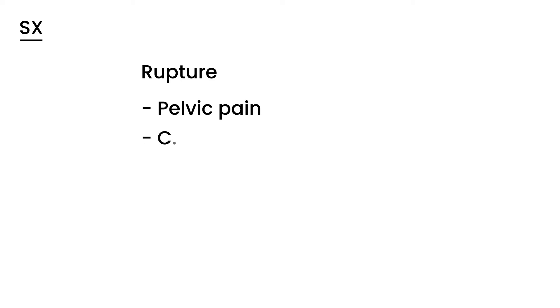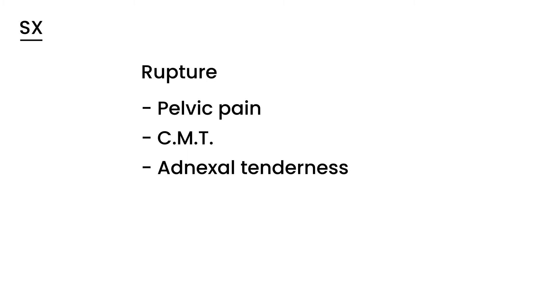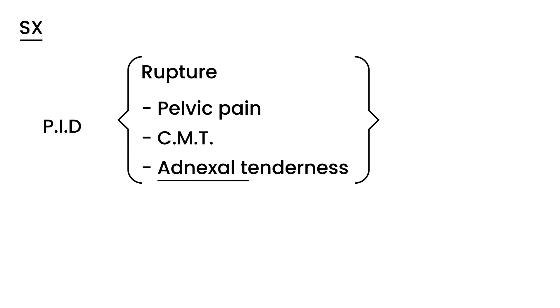Symptoms can also include cervical motion tenderness (CMT) and adnexal tenderness. Cervical motion tenderness is when there is tenderness upon moving the cervix with a finger during physical exam. Adnexal tenderness means tenderness in the adnexa area of the pelvis. These symptoms overlap with pelvic inflammatory disease, so how do you differentiate the two — whether on a licensing exam or in clinical practice?